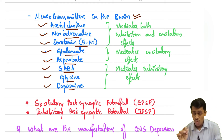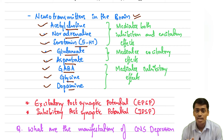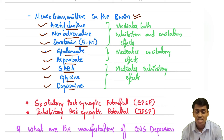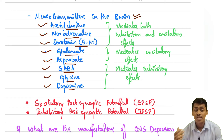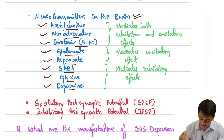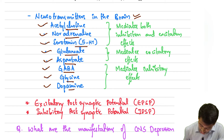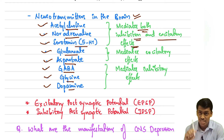We have two types of neural potentials in the brain: the excitatory potential and the inhibitory potential. The excitatory potential causes excitation and the inhibitory potential helps in inhibition of transmission. These are also called the excitatory post-synaptic potential (EPSP) and the inhibitory post-synaptic potential (IPSP). Acetylcholine, noradrenaline, and serotonin help in mediating both the inhibitory as well as the excitatory effects in the brain.